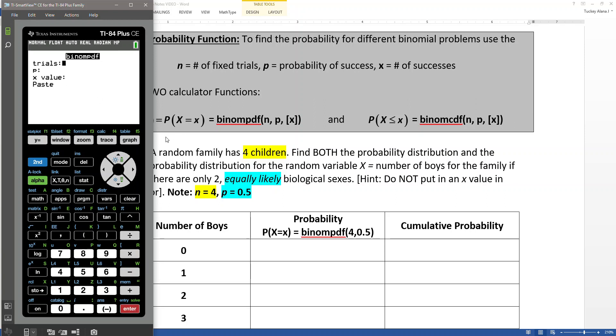Now my trials is N, right? So I have four trials, so that would be four. My probability of success is 0.5. Now if all I want is the top row, say, then I could just type in the value zero and press enter.